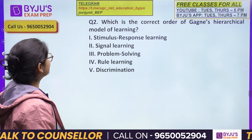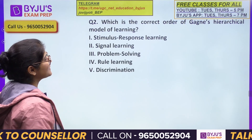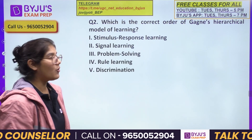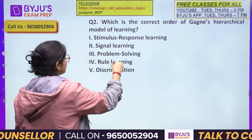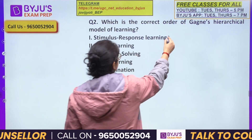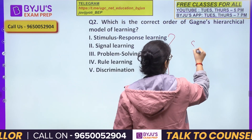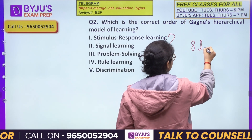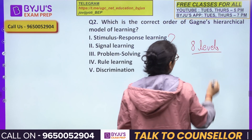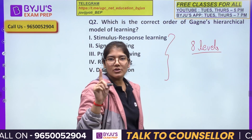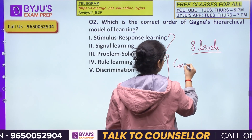The next question asks about the correct order in Gagne's learning hierarchical model. Tell me in the comment section about this learning hierarchy, which has eight levels of learning.